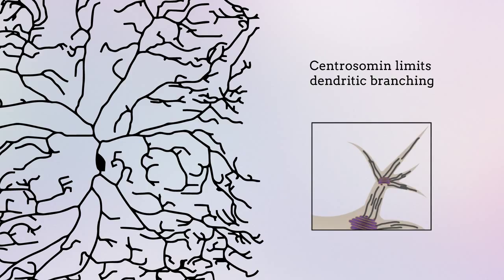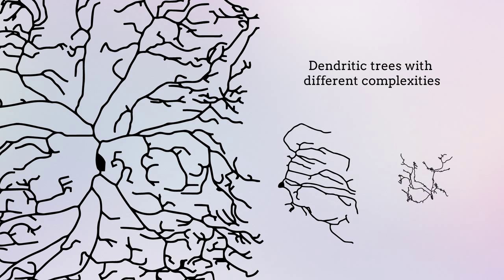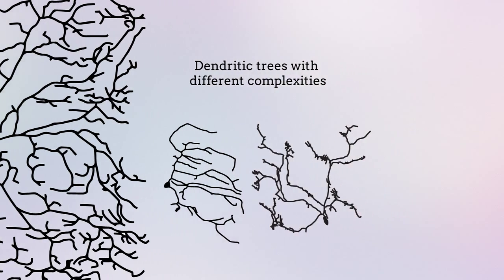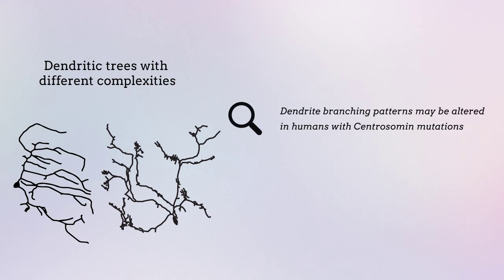This new understanding of the function of centrosomin helps to explain how dendritic trees with different complexities are formed. Further studies are needed to determine whether dendrite branching patterns are altered in humans with centrosomin mutations, and whether interventions targeting dendrite formation processes might protect against the onset of some neurological disorders.